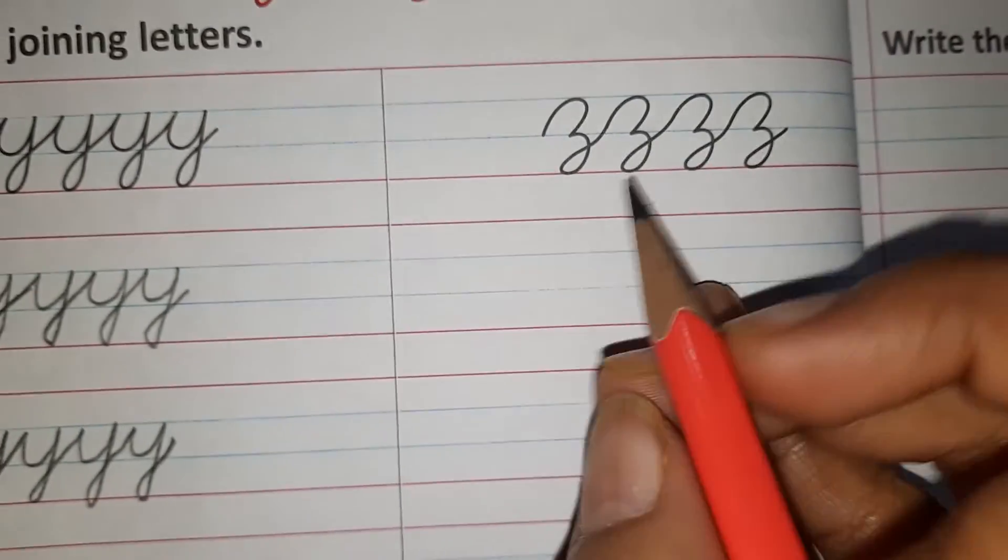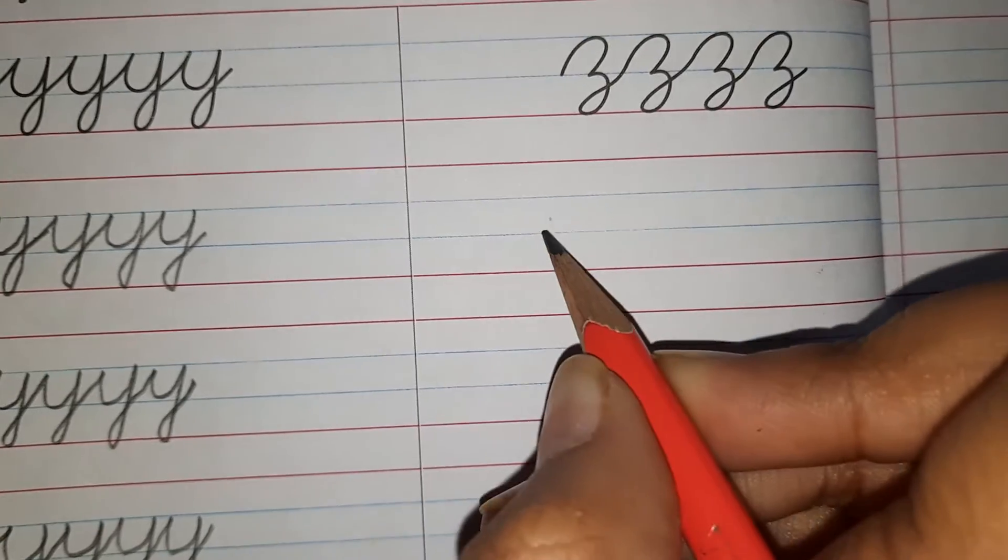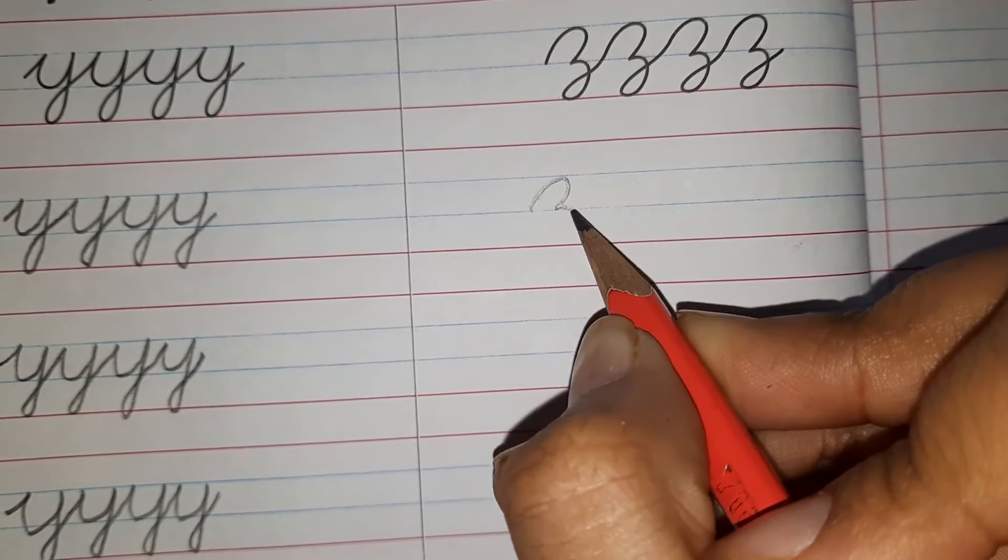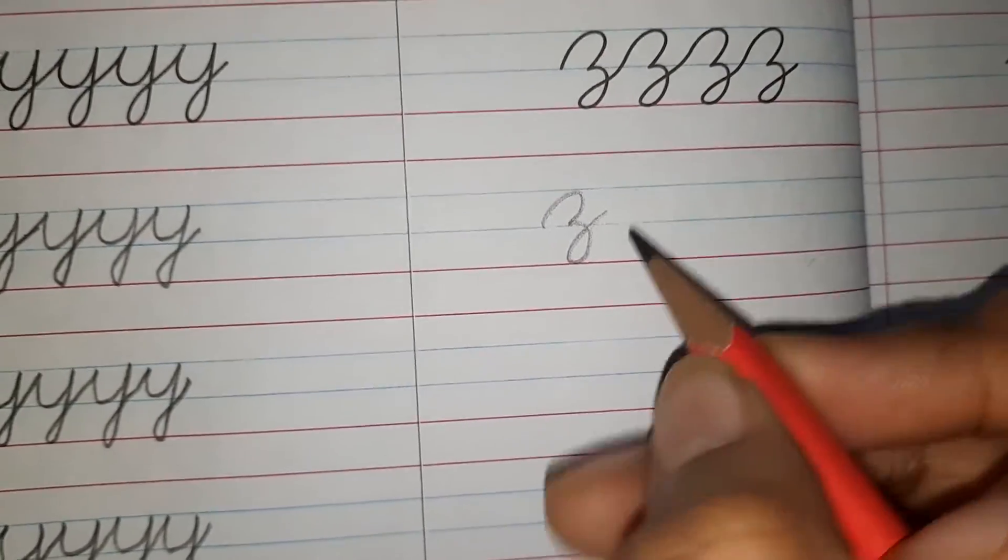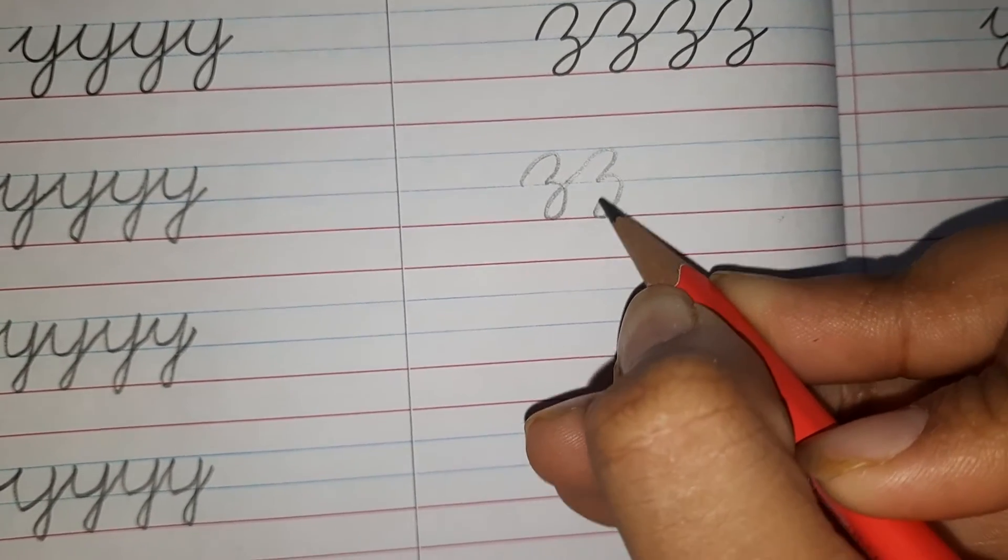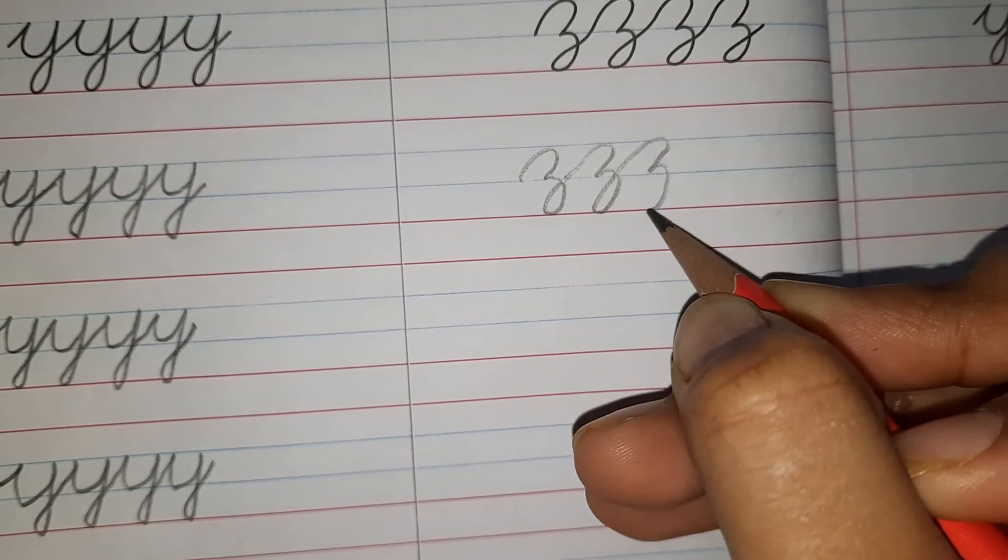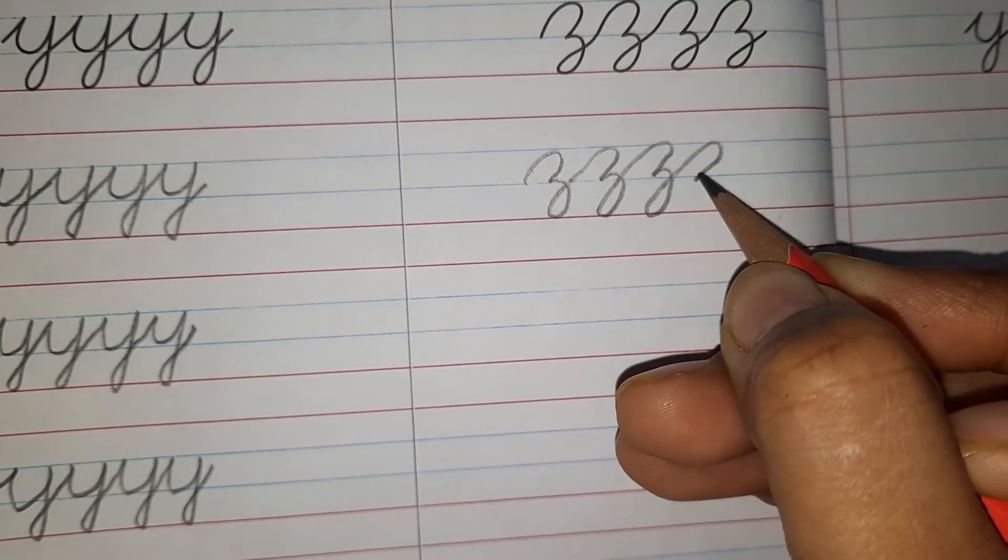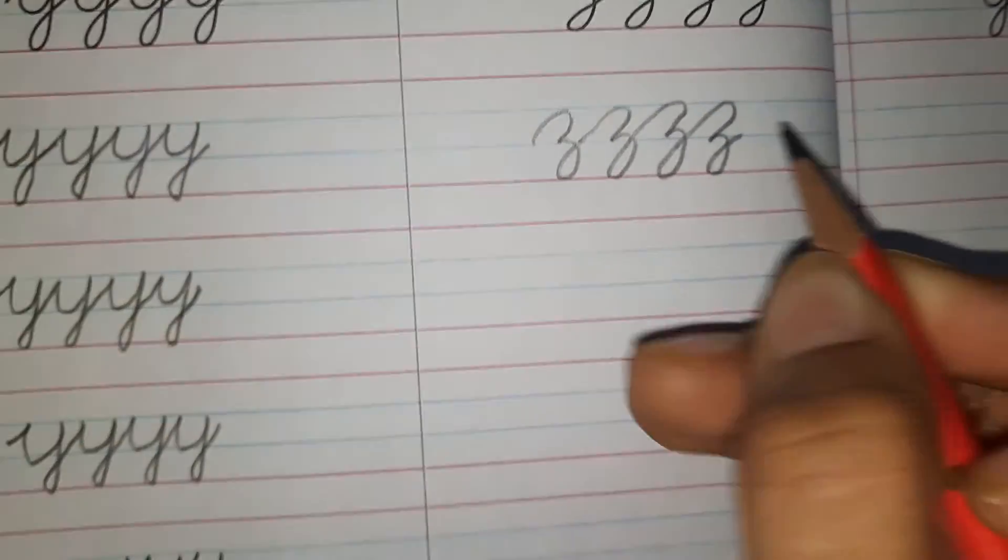Now come to the next one which is z. So you will form small cursive z like this. And then you will join it with the rest of them. You will do it four times. Like you can see we go up, come here to the blue line, turn around and like this.